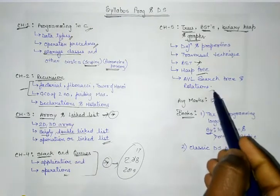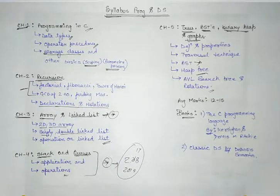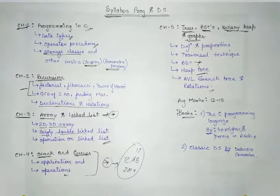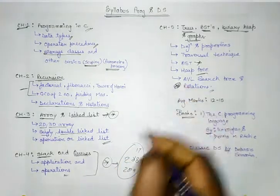And next thing is AVL search tree. So AVL search tree is also one of the important things because of the problems that occur in AVL, like right rotation, left rotation, LR, RL problems. So these kind of problems, because of these kind of problems, this topic is one of the important topics in data structure.